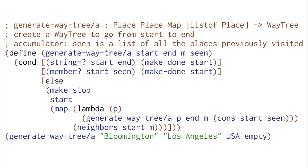Now when we run our program with generate-way-tree/a and an initial accumulator that says we haven't been to any places yet, we will correctly get a way tree that describes how to get from Bloomington to Los Angeles.